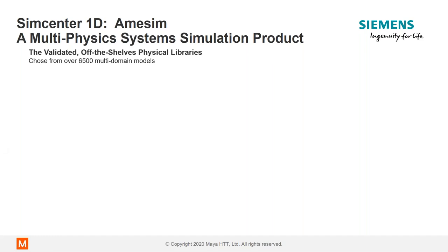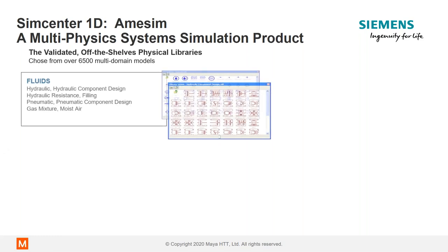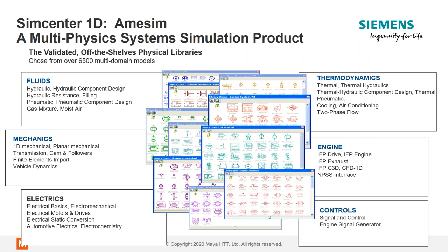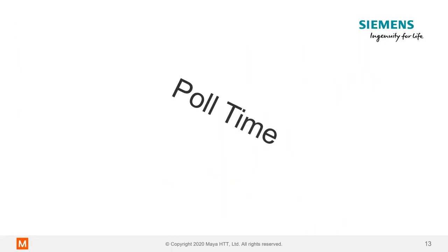Focusing on 1D system simulation: Simcenter AIMSIM is a multi-physics simulation software using a variety of physics-based libraries to create models. These include fluid mechanics, electrical, thermodynamics, engine, and controls — just a few of the many libraries available. These libraries are ready-to-use, with more than 6,000 components developed and validated in cooperation with industrial partners. AIMSIM also has extensive industry-based libraries covering automotive, aerospace, industrial machinery, and marine applications.